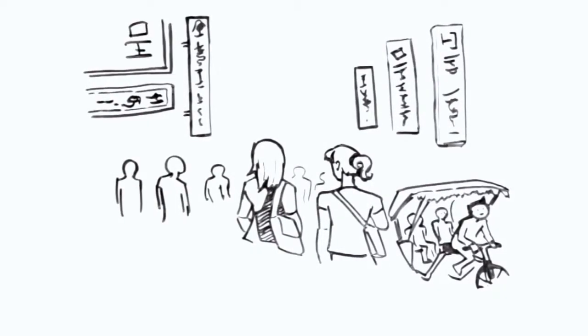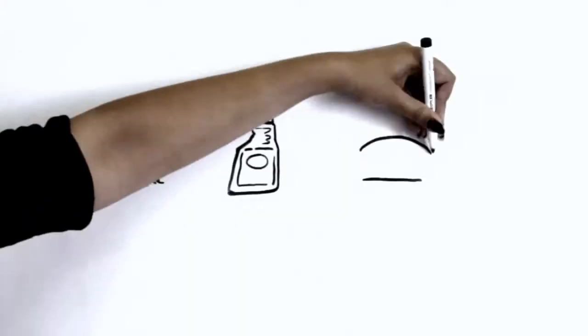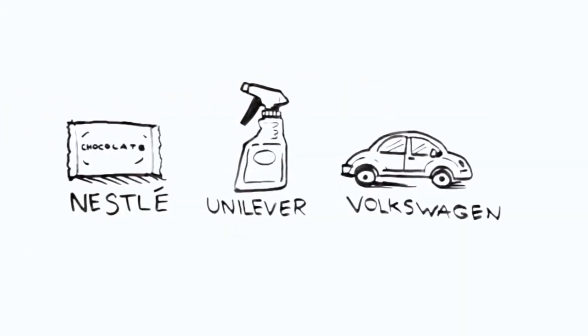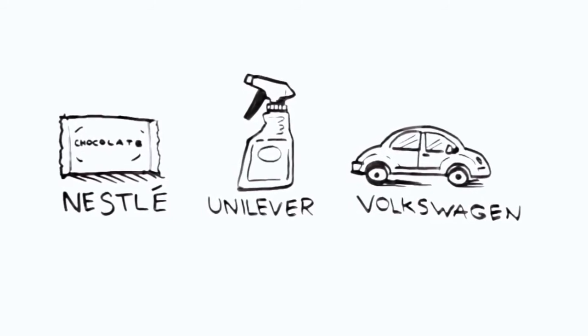And that's really a theme that you can play in multiple ways. You can play that through developed market companies like Nestle, Unilever, Volkswagen, which make these products which the emerging consumer aspires to.